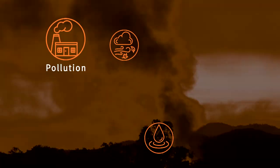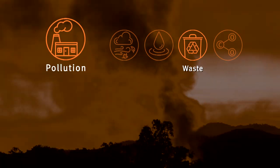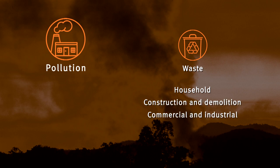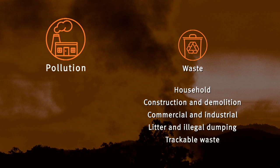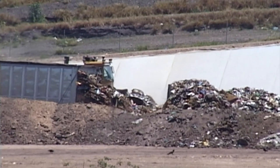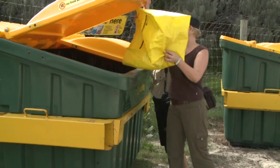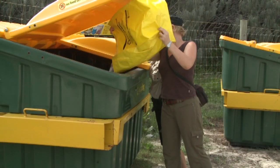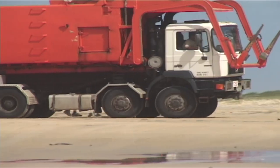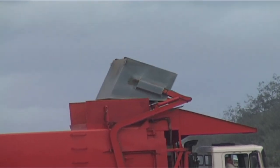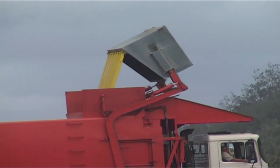The waste sub-theme discusses five waste types: household, construction and demolition, commercial and industrial, litter and illegal dumping, and trackable waste. The volume of waste going to landfill, recovered or recycled, is further analysed. The economic, environmental and social costs associated with waste generation and disposal are also discussed here as a sub-theme.